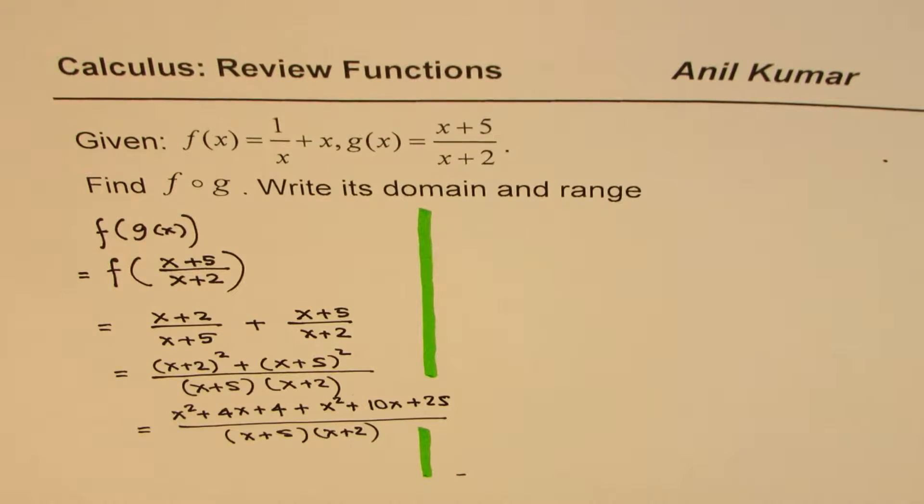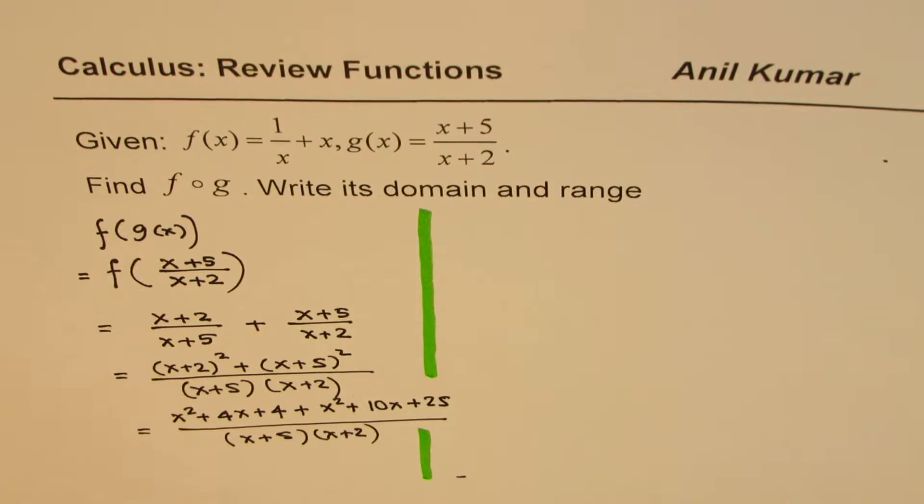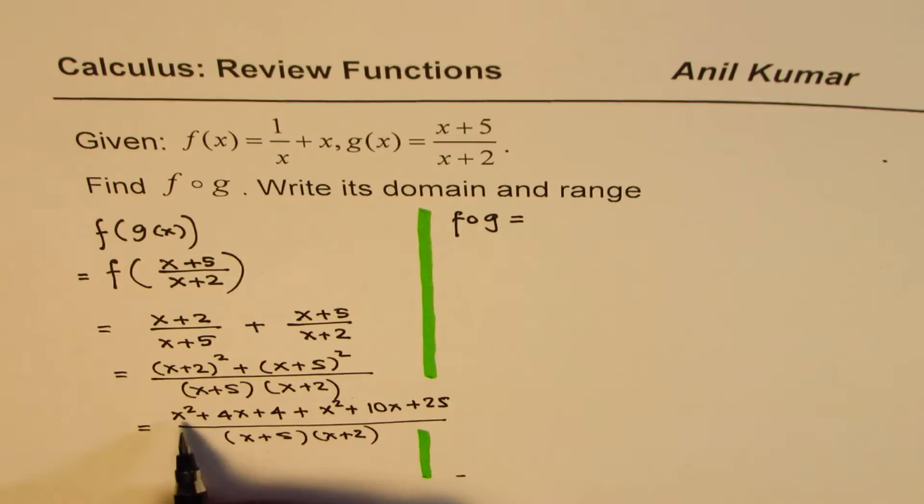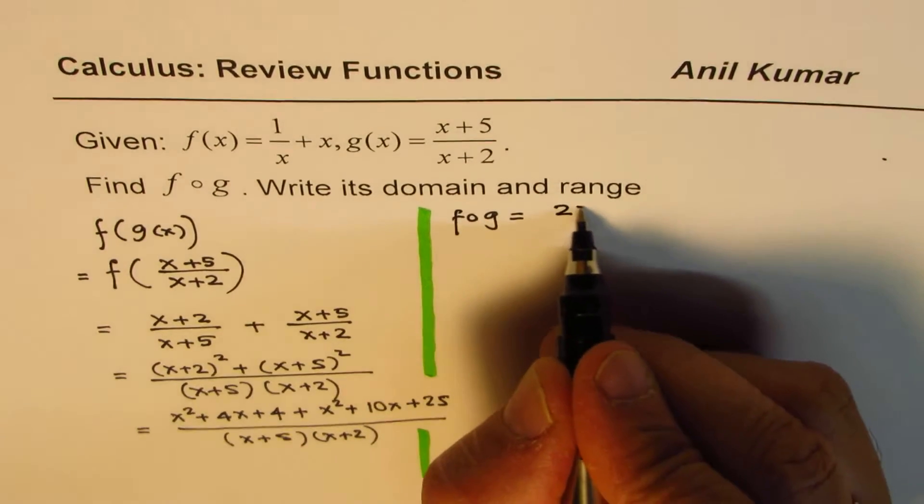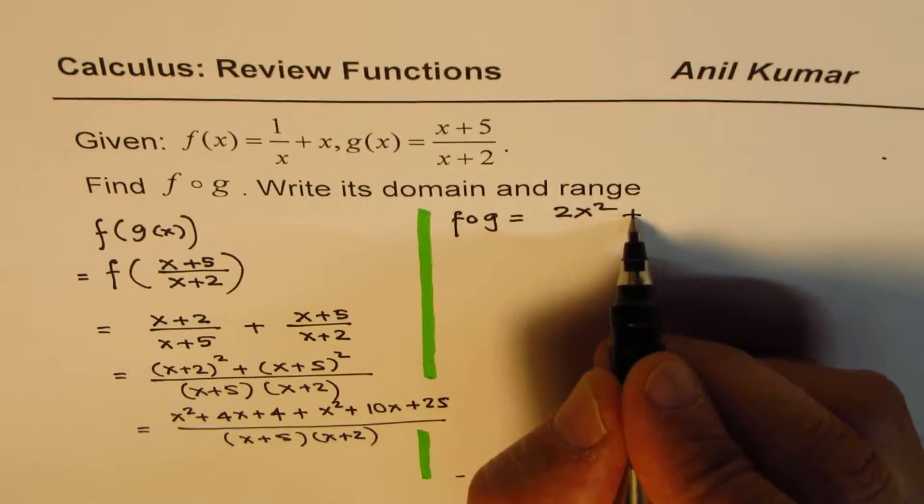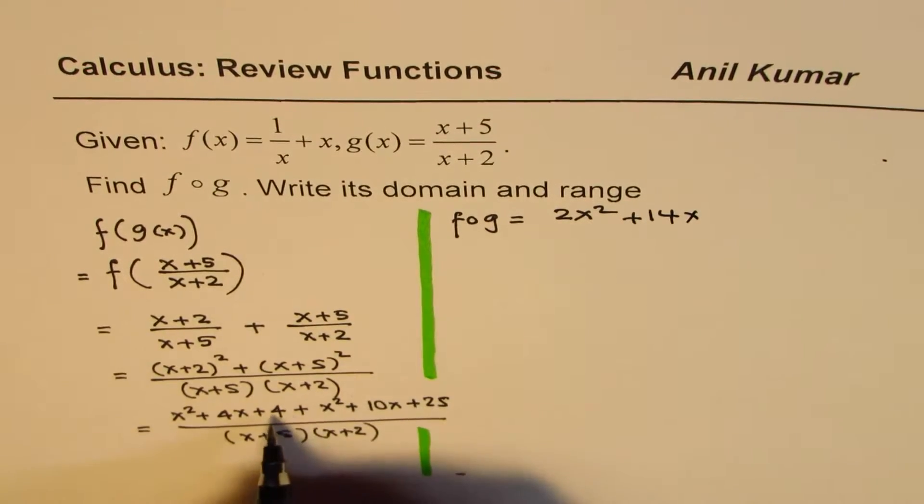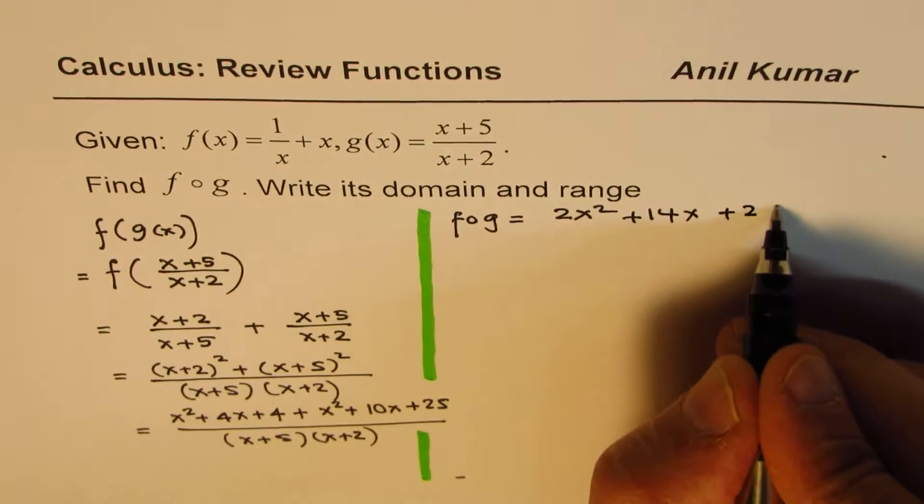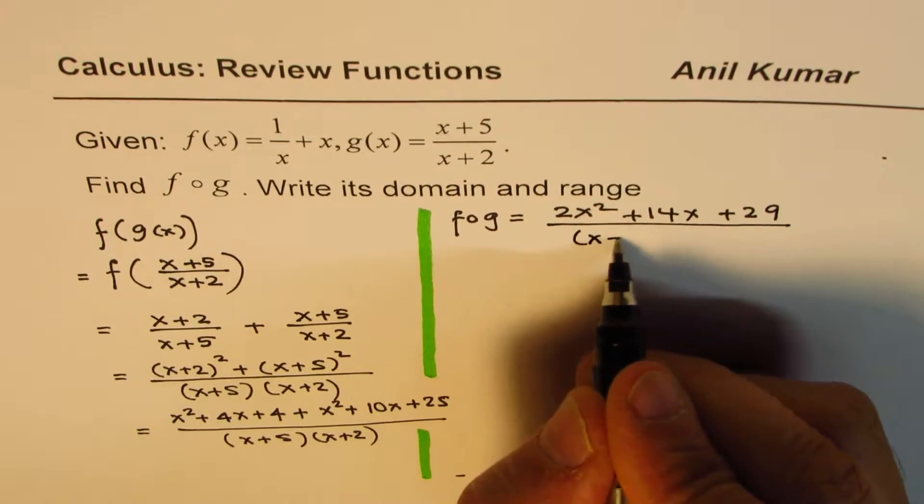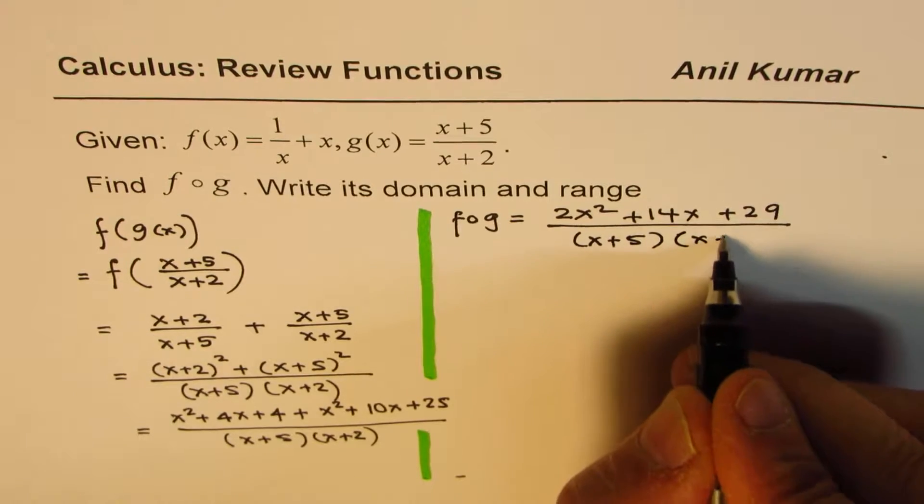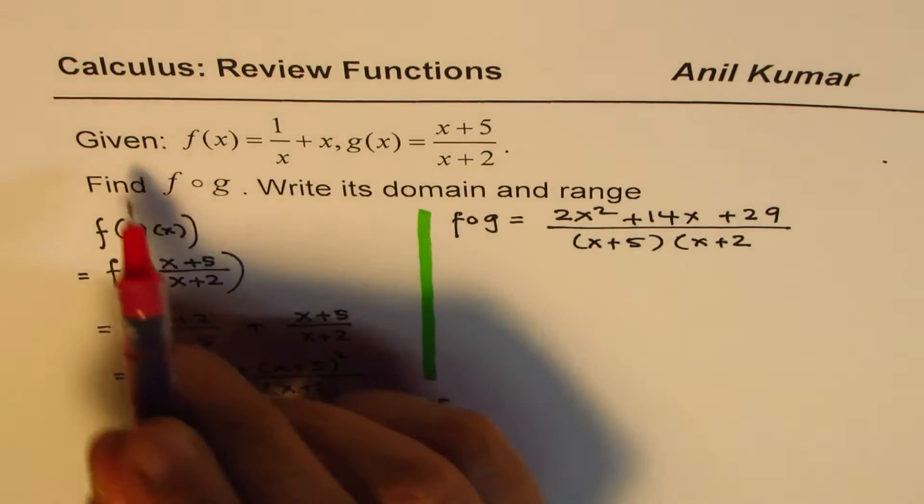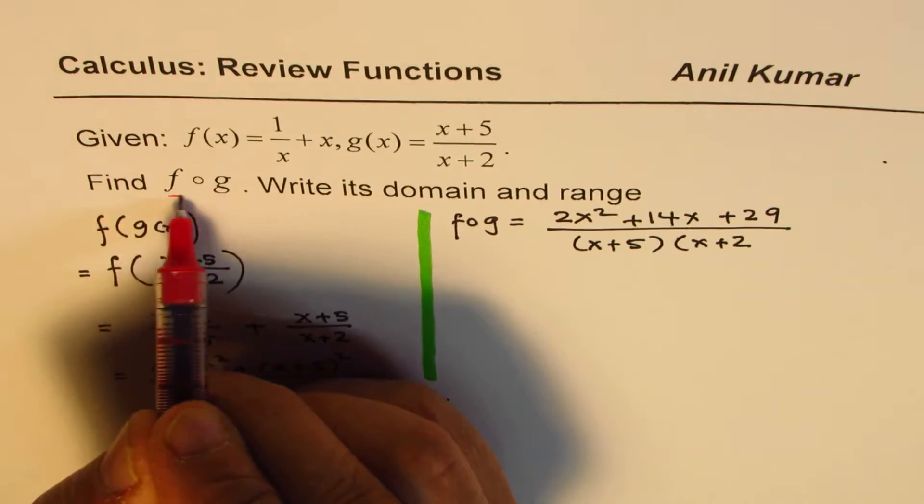Now let me just do one more step of simplification. We have f of g equals 2x square, 4x plus 10x is 14x, 4 plus 25 is 29, divided by x plus 5 times x plus 2. So we have done the first part of writing f of g.